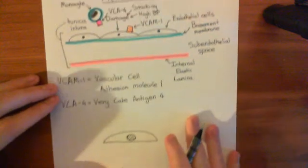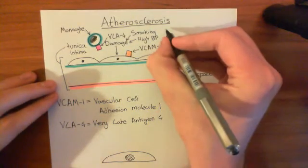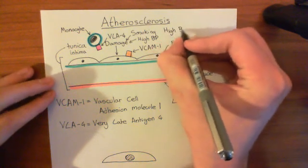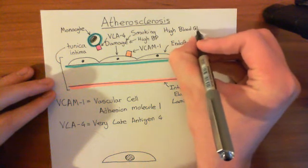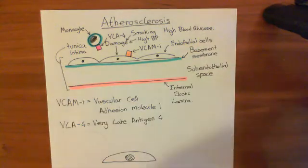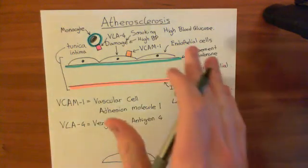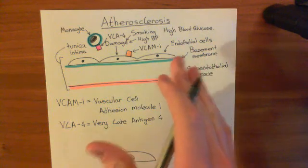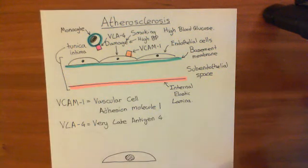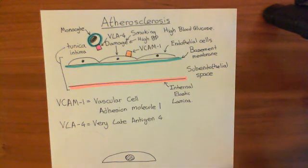Another way you can damage the endothelium is hyperglycemia — high blood glucose can damage cells as well. What disease do you get very high blood glucose in? That's diabetes. Badly controlled diabetes puts you at risk of developing atherosclerosis, because the high blood glucose damages the endothelial cells and sets off the whole cascade leading to the formation of an atherosclerotic plaque.